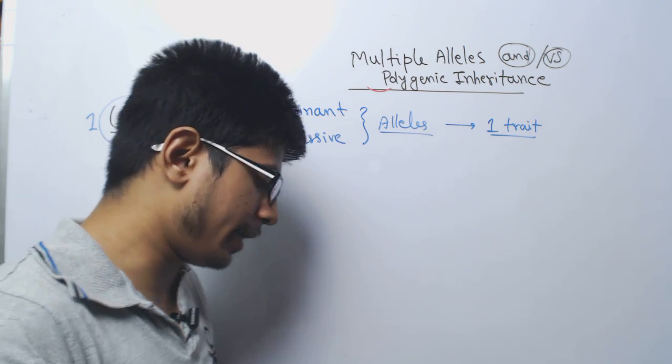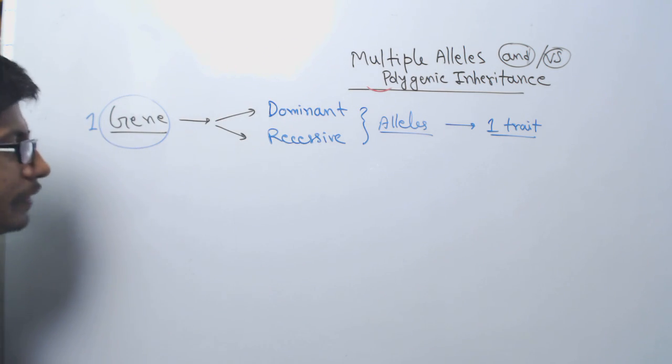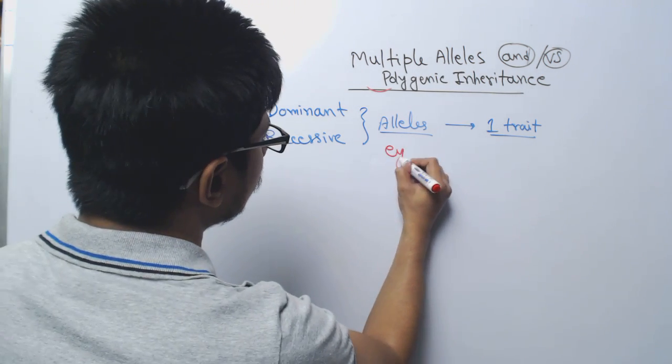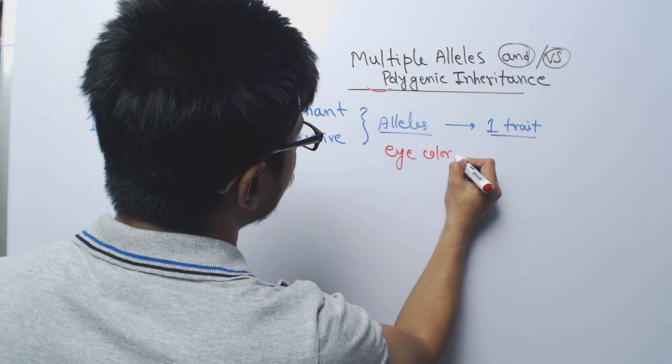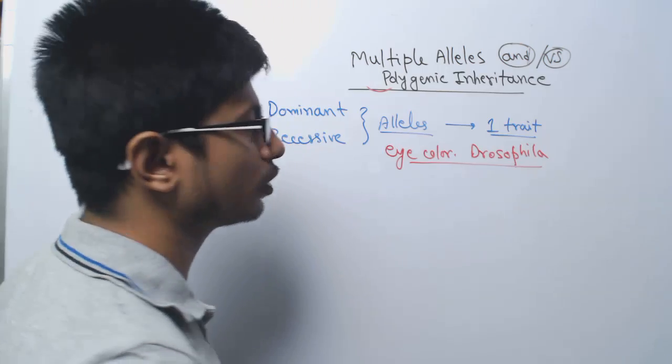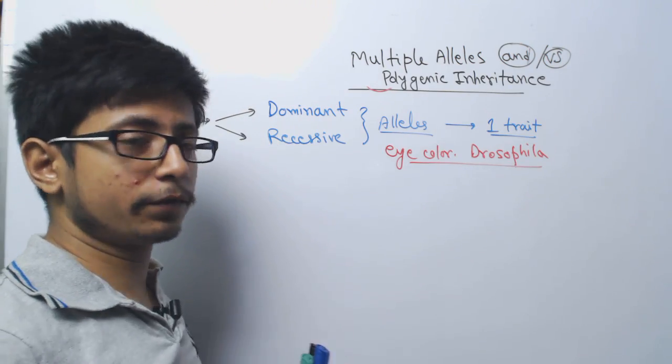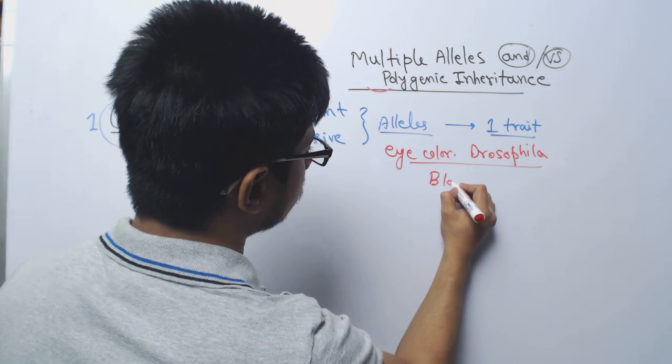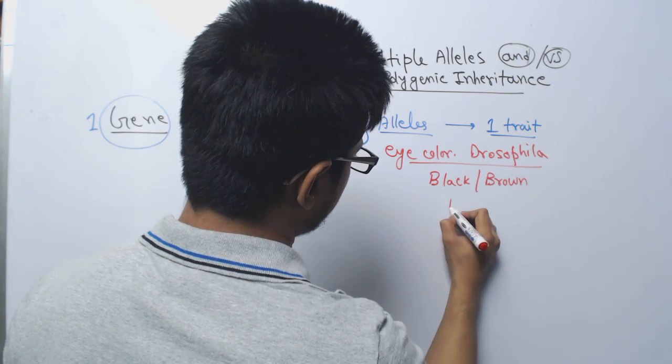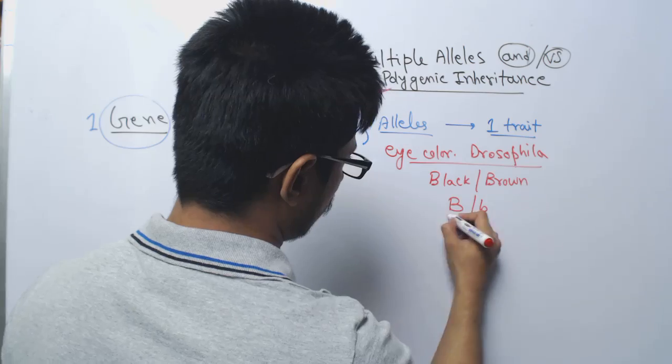For example, let's say if I talk about the eye color in Drosophila. Eye color in Drosophila is controlled by one gene and two different versions of that: black and brown. Black is the dominant capital B, brown is small b.